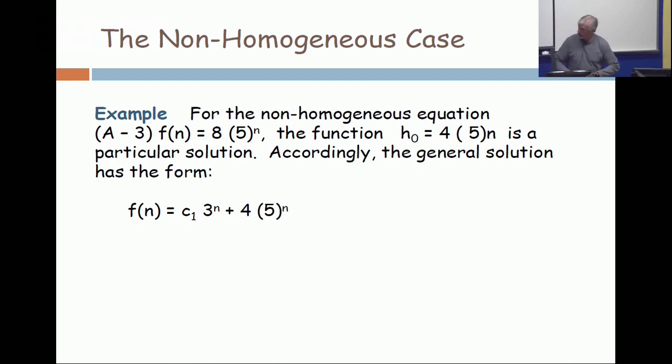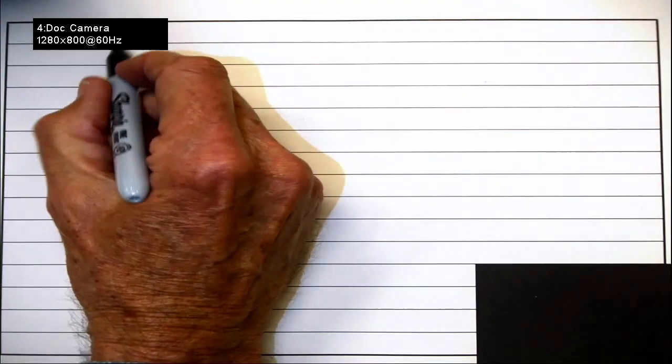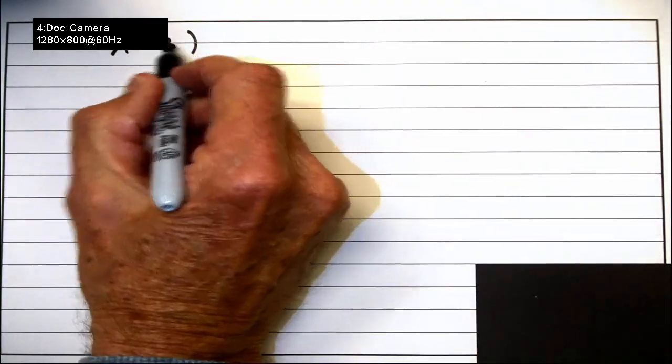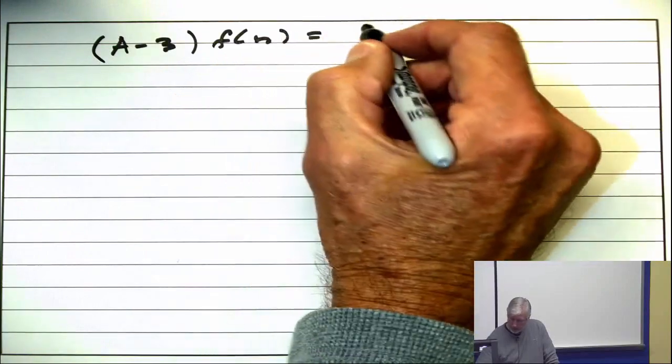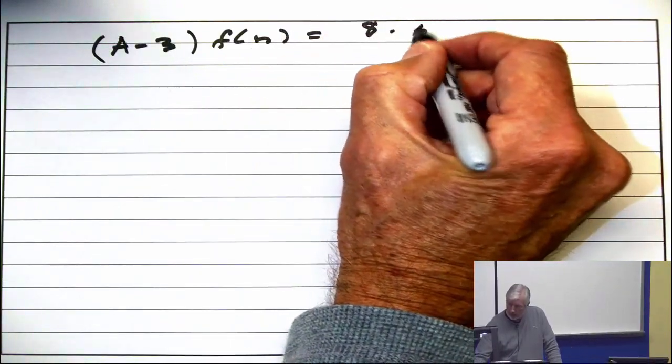All right, so let me write the equation. (A - 3)F(n) = 8(5)^n, and the solution is supposed to be 4(5)^n. All right, again, the equation was (A - 3)F(n), and that's supposed to equal 8(5)^n.